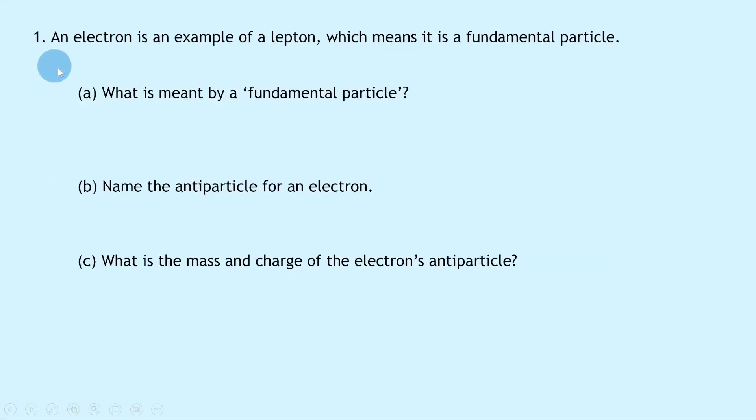So let's get started. Question one says an electron is an example of a lepton, which means it is a fundamental particle. Part a asks what is meant by a fundamental particle. Well, remember in the theory video we saw that a fundamental particle is a particle that does not consist of any other particles. It is in its simplest form.